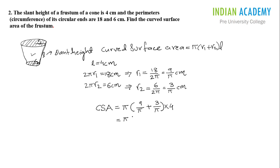We can add what is inside the bracket: π into 9 plus 3 is 12, divided by π, into 4. You can cancel out π and you will be getting 48.